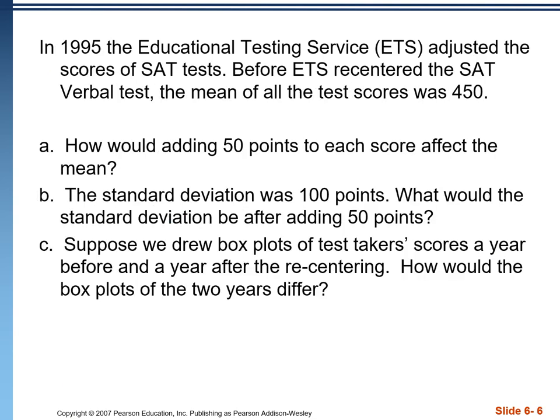Here's an example applying that. In 1995, the SAT verbal test had a mean of 450. Adding 50 points to each score would increase the mean by 50, switching it to 500. The standard deviation was 100 points. After adding 50 points, the standard deviation is still 100 points — the distribution isn't any more spread out. If we drew box plots before and after the recentering, they would look the same, just shifted right by 50 points.